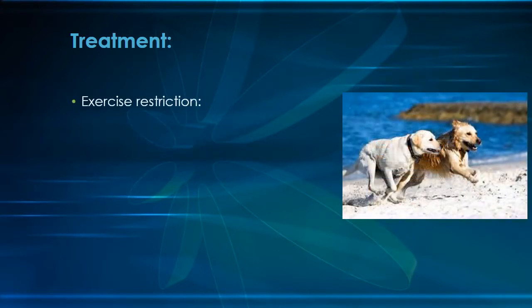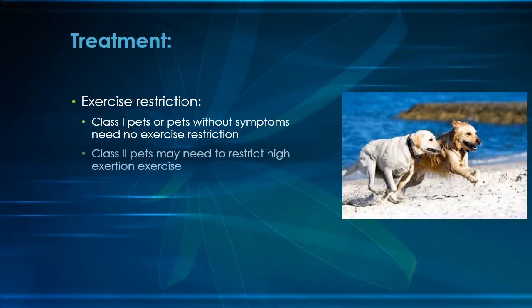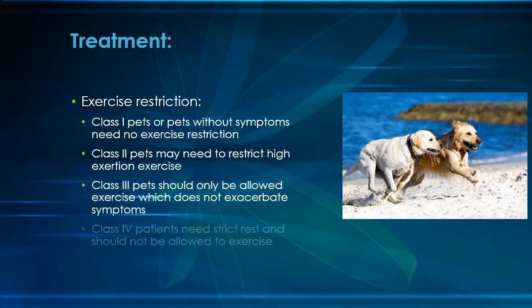When it comes to exercise, we adjust what is allowed based on the stage of disease. Dogs in class one, or asymptomatic pets, need no restrictions and can live perfectly normal lives for many years. Once the disease progresses to class two and above, owners must impose limits on the dogs, because they typically will not limit their own exercise until symptoms are severe. With time and progression of the disease, exercise restriction will have to be more intense, but usually by the time symptoms are bad, your dog is not going to want to exercise as much.